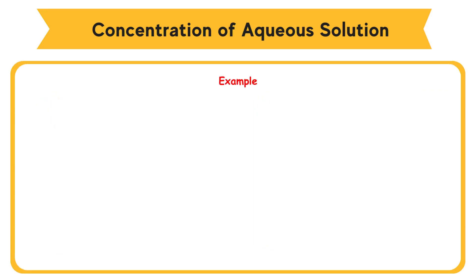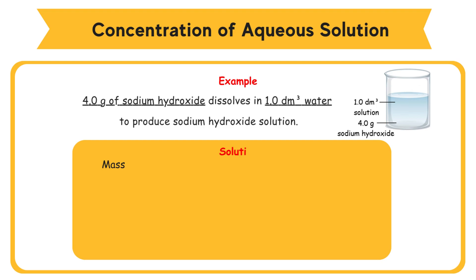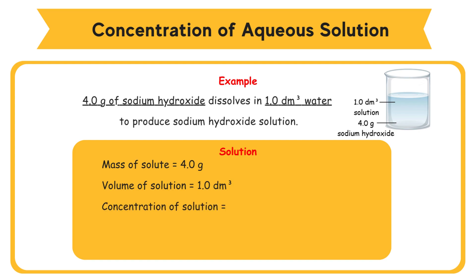Example: 4.0 grams of sodium hydroxide dissolves in 1.0 dm³ water to produce sodium hydroxide solution. Mass of solute equals 4.0 g, volume of solution equals 1.0 dm³. Concentration of solution equals 4.0 g over 1.0 dm³, equals 4.0 g/dm³.